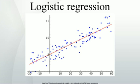Another example might be to predict whether an American voter will vote Democratic or Republican, based on age, income, gender, race, state of residence, votes in previous elections, etc. The technique can also be used in engineering, especially for predicting the probability of failure of a given process, business, system, or product. It is also used in marketing applications such as prediction of a customer's propensity to purchase a product or cease a subscription. In economics it can be used to predict the likelihood of a person's choosing to be in the labor force, and a business application would be to predict the likelihood of a homeowner defaulting on a mortgage. Conditional random fields, an extension of logistic regression to sequential data, are used in natural language processing.